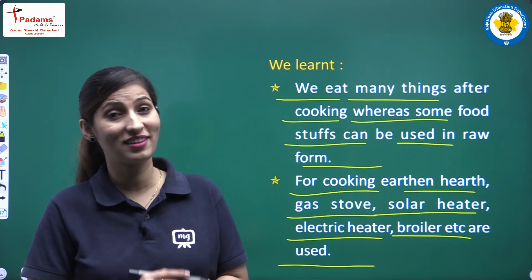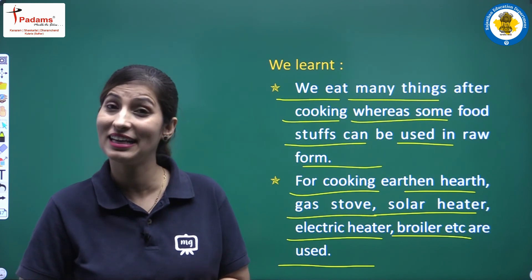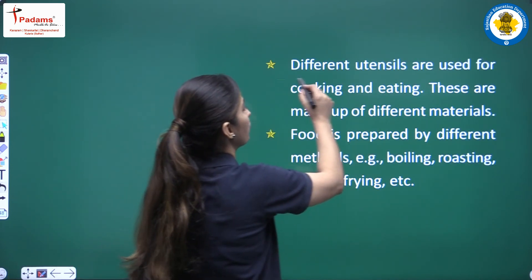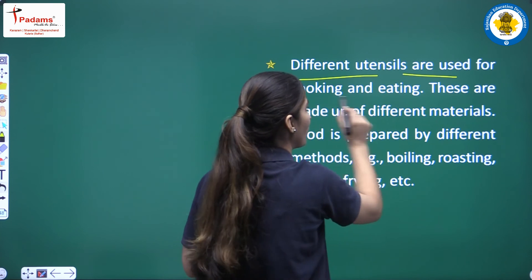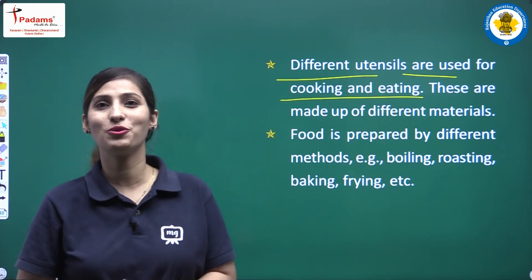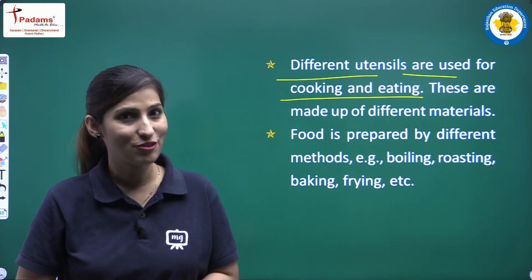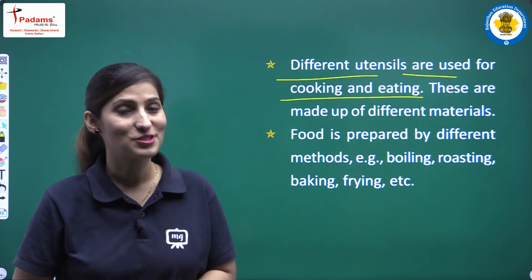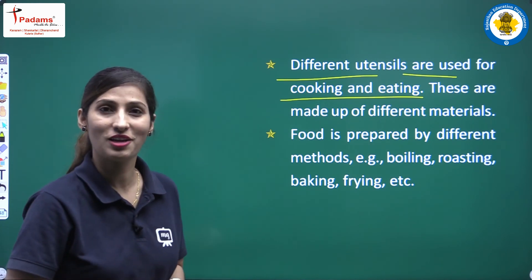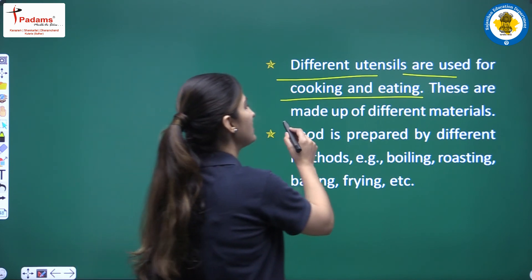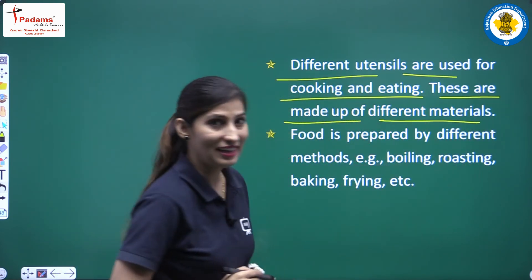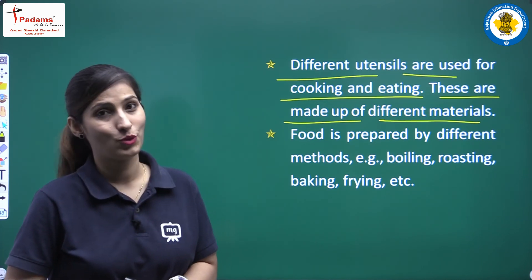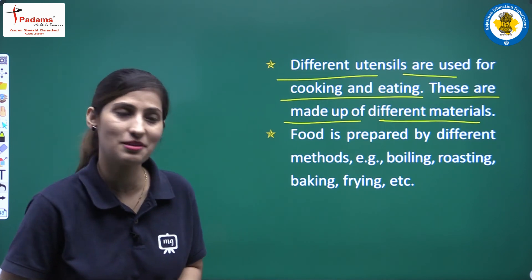For the earthen stove we use wood, for the broiler — sigari — we may need dung or gas cylinders for gas stoves. Different utensils are used for cooking and eating — wok, griddle, tongs, platter, rolling pin, rolling board — and these are made up of different materials like glass, marble, wood, plastic, and steel.